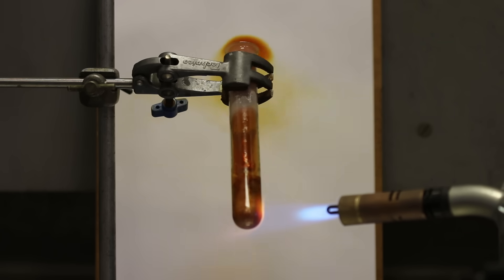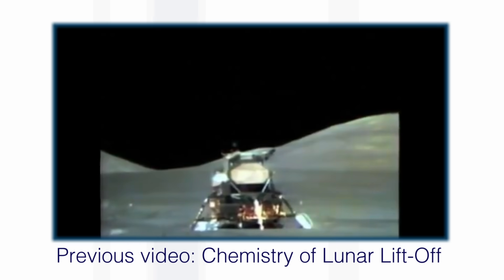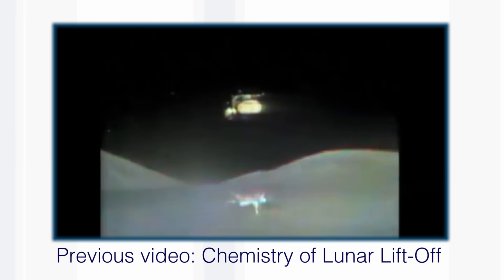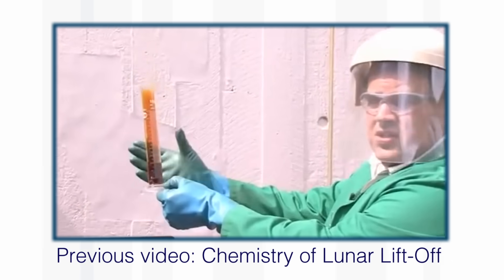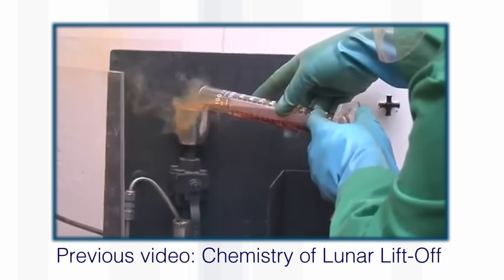NO2 itself can, because it has an unpaired electron, can dimerize. Two of them form N2O4, which is a liquid at room temperature, and we have shown on one of our other videos, can be used as an oxidizer for rockets. For example, the lunar module taking off from the moon used N2O4 as the propellant. Now it's very volatile, it boils at 21 degrees C, so we have to keep it cold, and we put it into the reaction chamber.